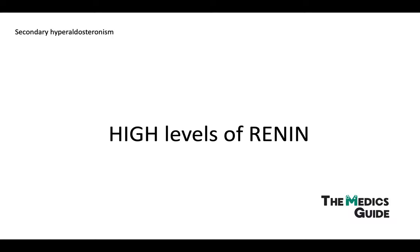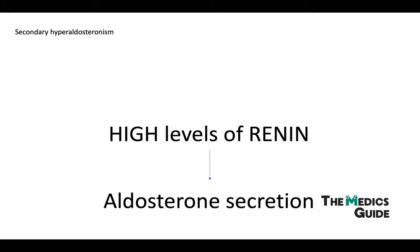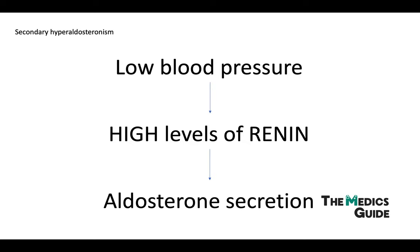Secondary hyperaldosteronism is when the problem causing excess aldosterone secretion is outside of the adrenal glands. It's usually caused by high levels of renin, due to chronic low blood pressure, and you might see this in conditions like congestive heart failure.